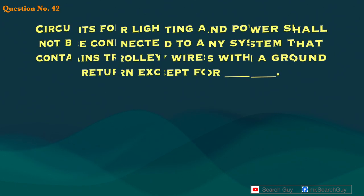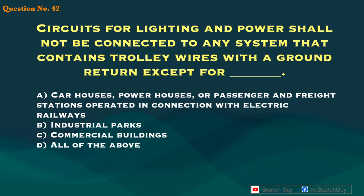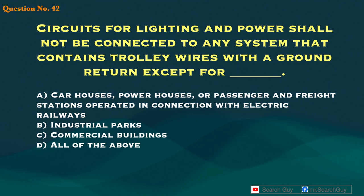Question 42. Circuits for lighting and power shall not be connected to any system that contains trolley wires with a ground return, except for blank. A. Car houses, power houses, or passenger and freight stations operated in connection with electric railways. B. Industrial parks. C. Commercial buildings. D. All of the above.